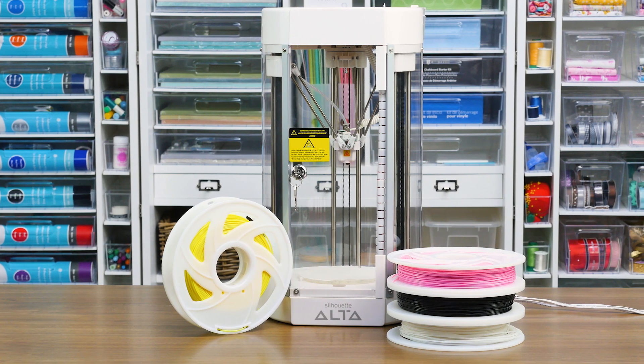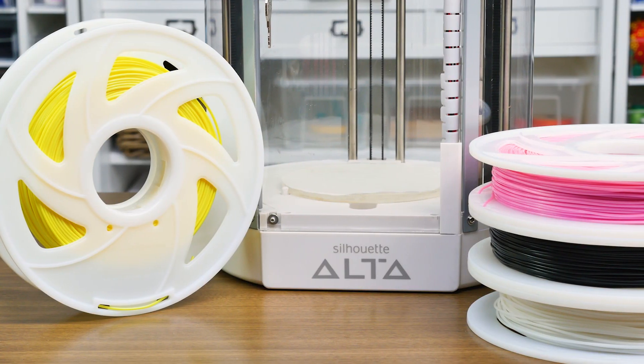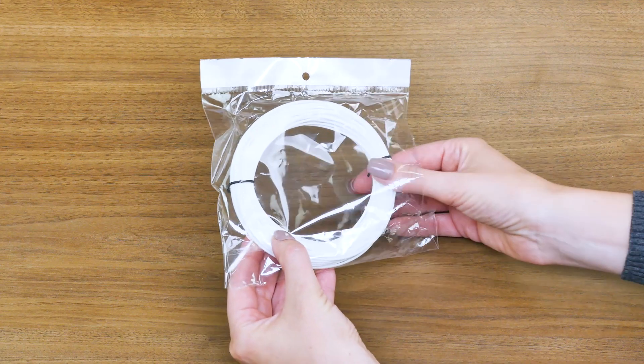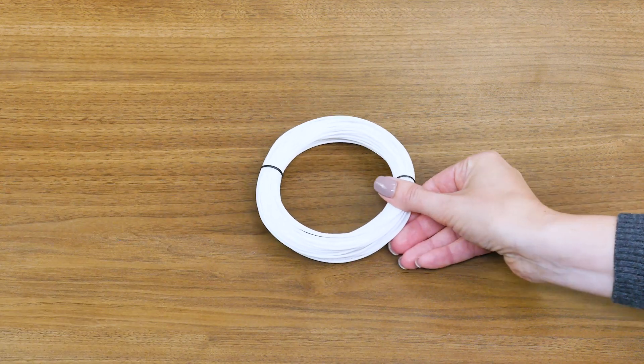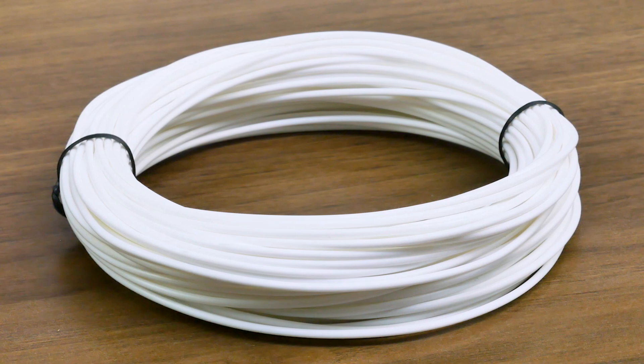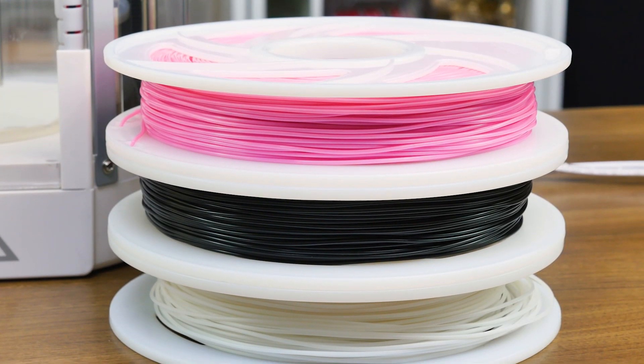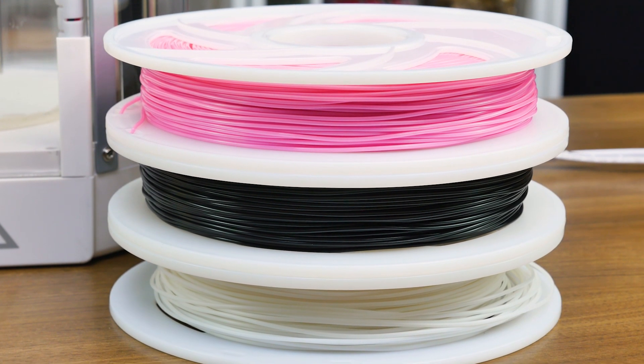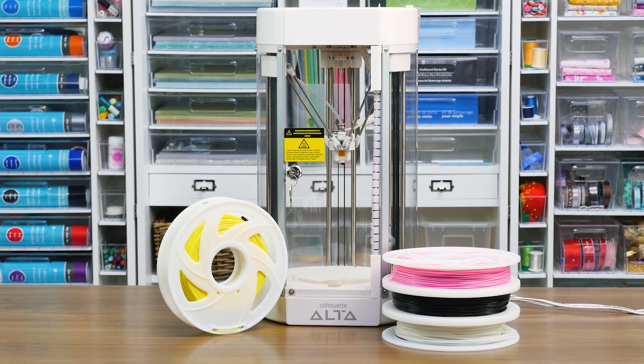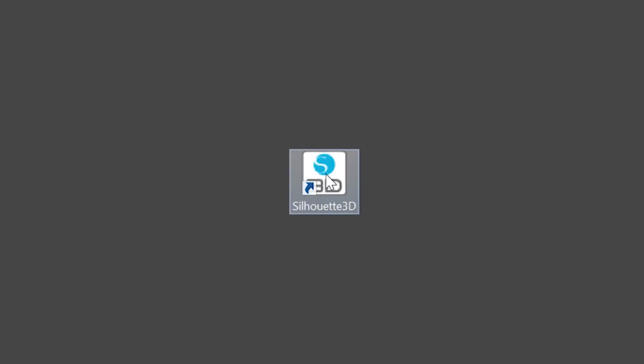Filament Loading. The Alta can print any PLA or polylactic acid filament that is 1.75 mm thick. Included with your machine is a loose roll of white filament that is approximately 60 grams in weight. Should you wish to purchase more filament, Silhouette sells spools with 500 grams of filament in a variety of colors. To load the filament in your Alta 3D printer, start by opening Silhouette 3D.